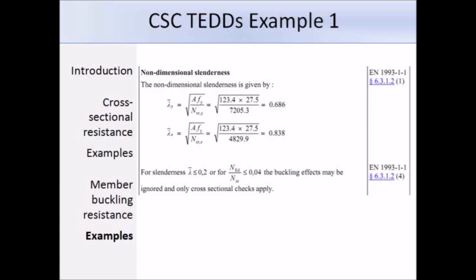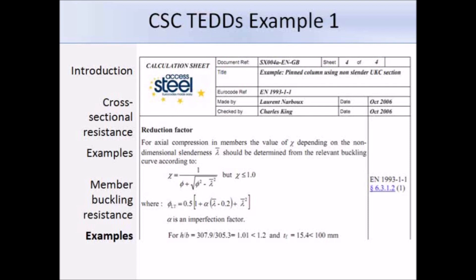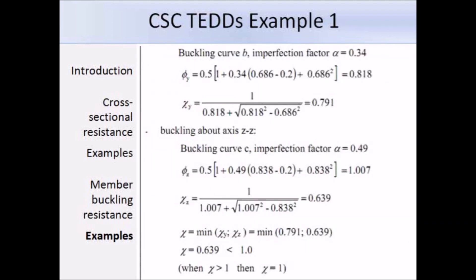Now we need to work out chi, the reduction factor. For that we need to know what phi and alpha are. The buckling curve is determined from table 6.2. We have a rolled section with h over b equals 1.01, which is less than 1.2, and the flange thickness is less than 100 mm. Therefore the buckling curve we use for buckling about the y-y axis is B, and for buckling about the z-z axis we use curve C. For buckling about the y-y axis we use curve B, and the corresponding value of alpha from table 6.1 is 0.34. Putting that into the equation for phi along with a value of lambda bar equals 0.686, we get a result of 0.818.